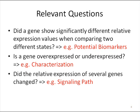As in many analyses in biology, relevant questions arise from the field of biology itself — they are not statistical questions. We are going to use statistics to find an answer, or at least a piece of information that will help us answer each of these questions. For example: did a gene show significantly different relative expression values when compared to the first state? These are called potential biomarkers.